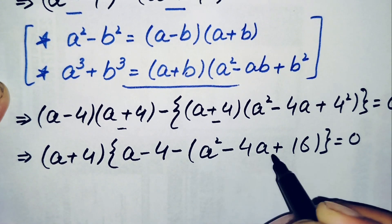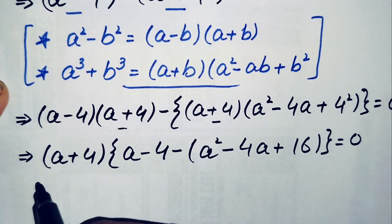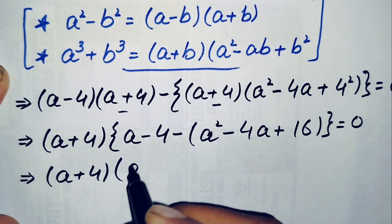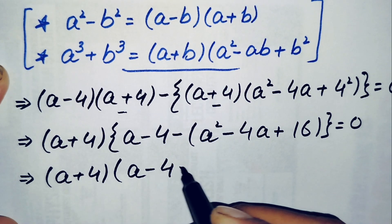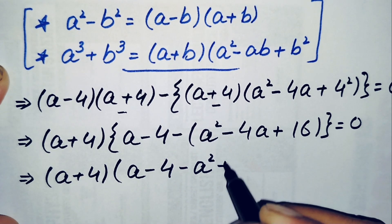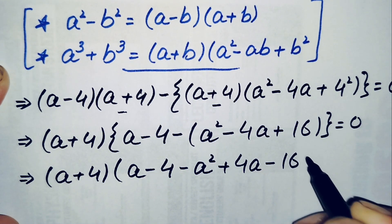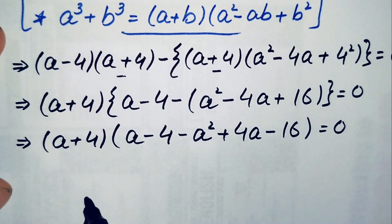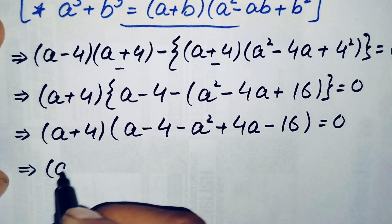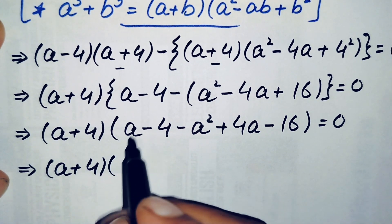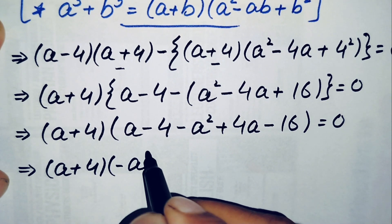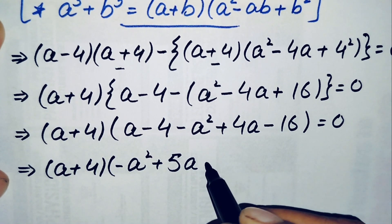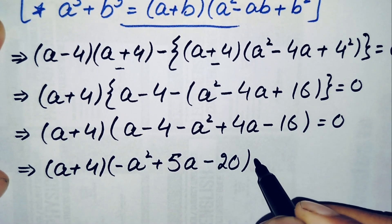Now we multiply the negative sign inside the parenthesis. So this becomes a plus 4 times a minus 4 minus a squared plus 4a minus 16, equal to 0. Simplifying further, this becomes a plus 4 times negative a squared plus 5a minus 20, equal to 0.